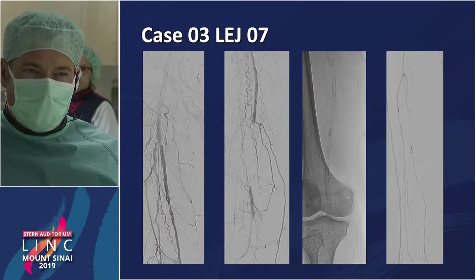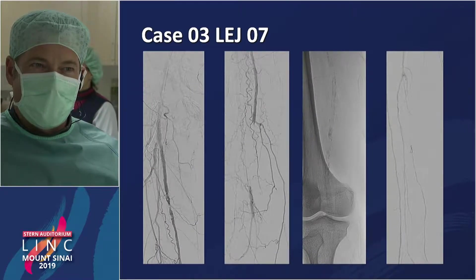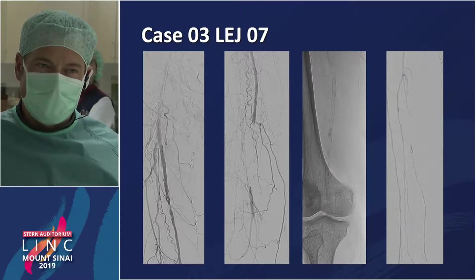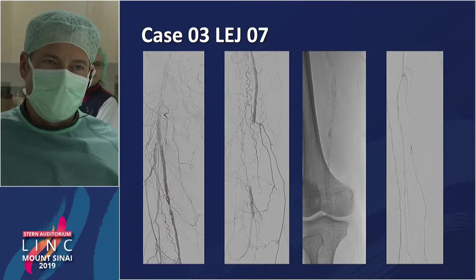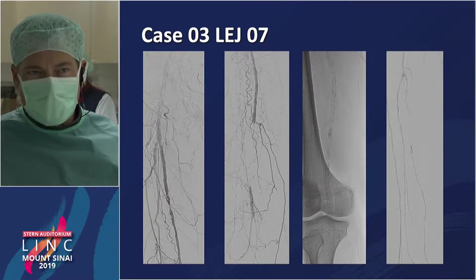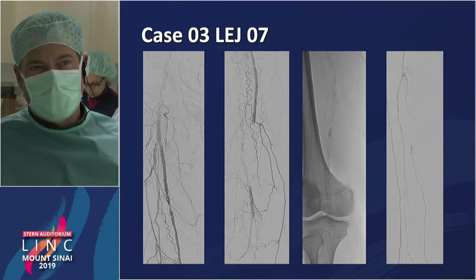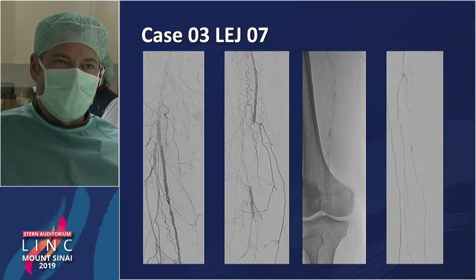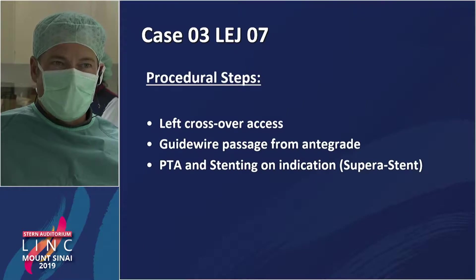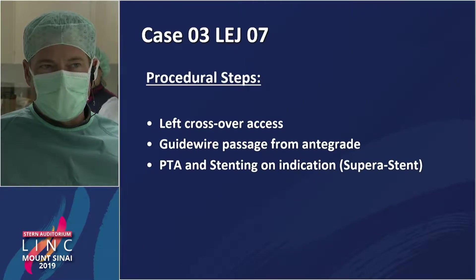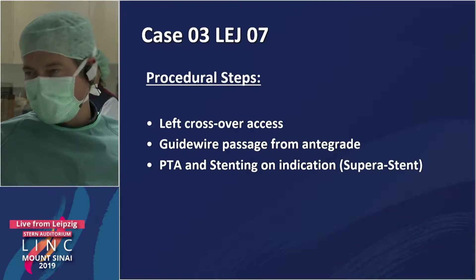The angiogram from the right side shows the proximal SFA is patent, but very distally at the P1 segment there is an occlusion with a lot of calcium. Below the knee there is runoff toward the foot. We are doing a left-side puncture crossover to pass the lesion.